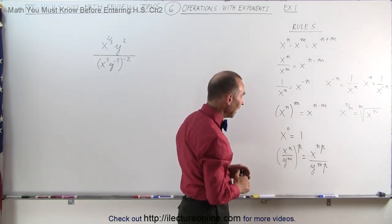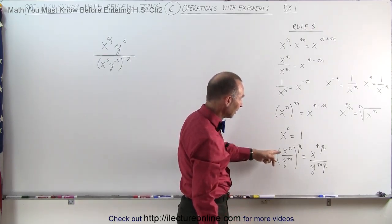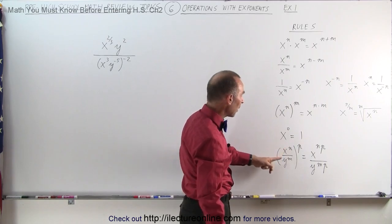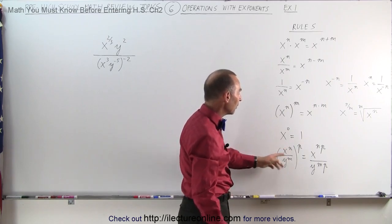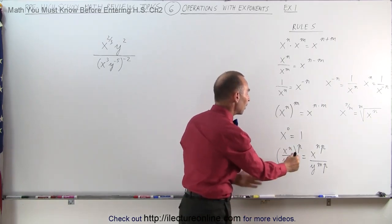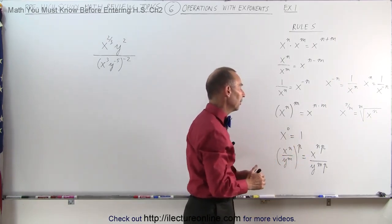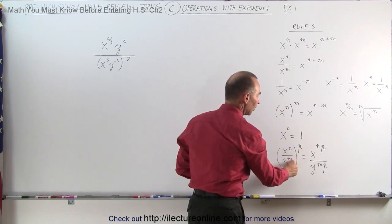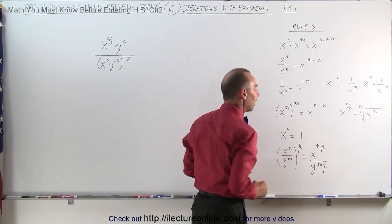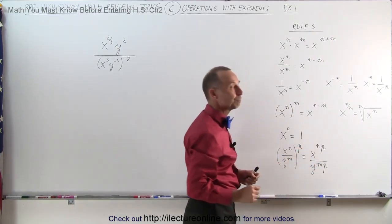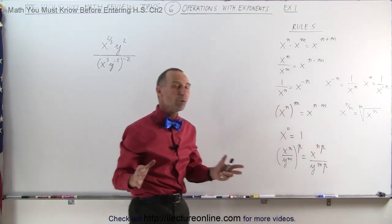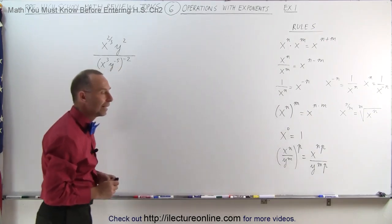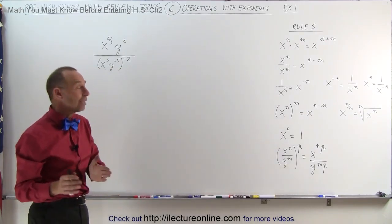If you have fractional exponents, the number at the bottom is the root of the number and the number at the top is the exponent. If you raise anything to the zero power, that always gives you 1, no matter what is there — unless what's there is equal to 0, which you don't want to do.